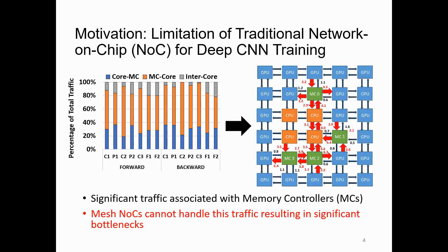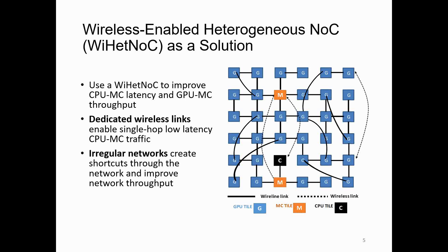In this paper, we propose a generic design methodology that can be used for any combination of neural networks and application domains to create a different type of network that uses irregular connectivity and both wired and wireless links to improve the state of the art. We call this network Y-Hit NoC. The main goal of this network is to improve the CPU-memory-controller latency while simultaneously improving GPU-memory-controller throughput, in order to achieve highly efficient systems.